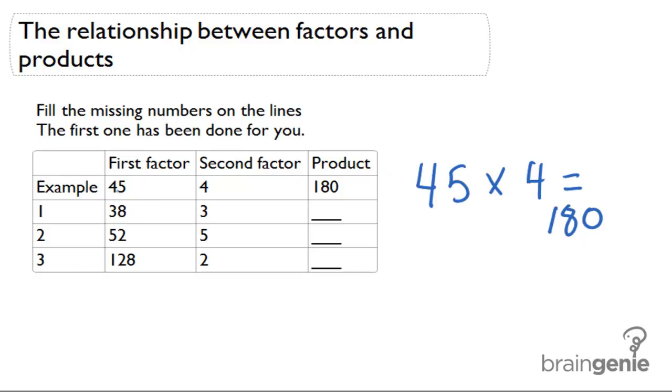So here let's take a look at the first example we have there which is 3 times 38 or 38 times 3 because we're doing multiplication and that's a really cool thing about multiplication. The first factor can come first and then the second factor or the second factor can come first and then the first factor.